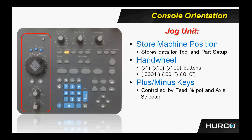That brings us to our jog unit. In the upper right corner, we have the store machine position button. This button stores data for tool and part setup — you simply highlight the field, depress this button, and it will teach the information into that particular field. We have the three blue buttons, which are increment buttons used with the hand wheel. Times one is one ten-thousandths of an inch per hand wheel graduation. Times ten, the middle button, is one-thousandths per click. The far right, times 100, is ten-thousandths of an inch per click. Directly below that, we have the plus and minus keys; press and hold these continuously and movement will continue until you release. Just below that is the potentiometer to control the feed of those plus and minus keys, and the bottom knob is used to select the axis that we wish to jog.